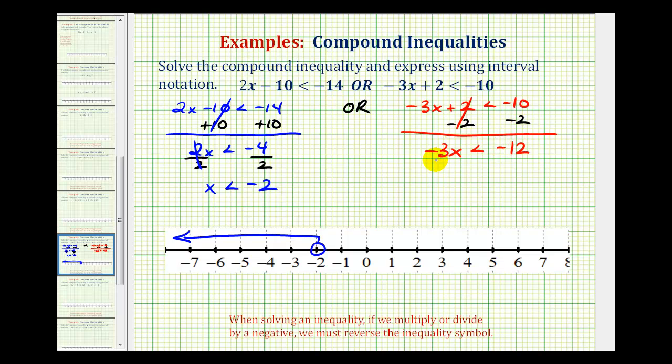And now we'll divide both sides by negative 3. Remember when we divide by a negative, we do have to reverse this inequality symbol. So here we have x, but then it's going to be greater than, and negative 12 divided by negative 3 is positive 4.